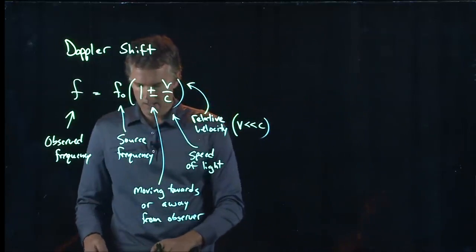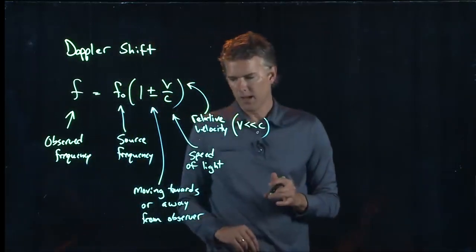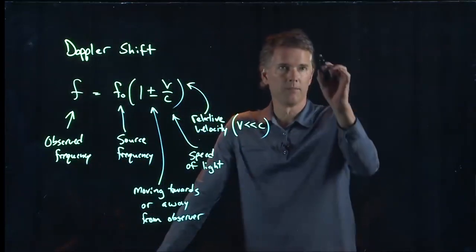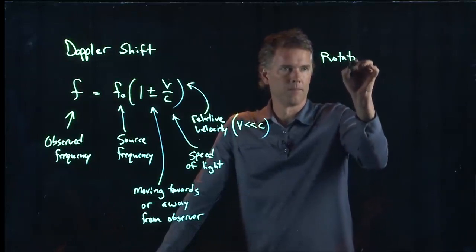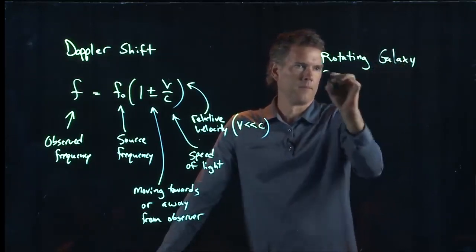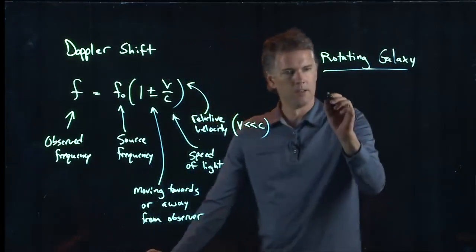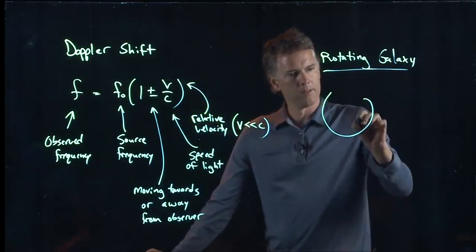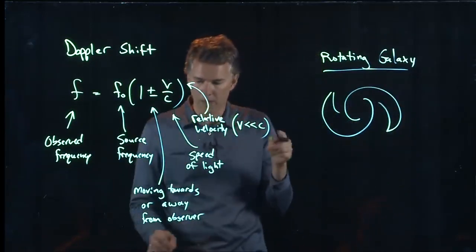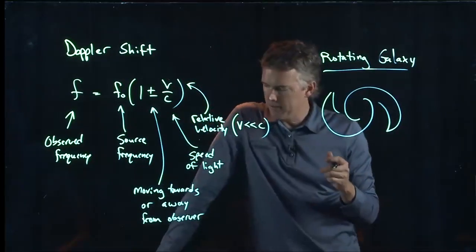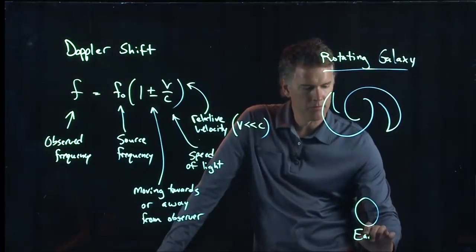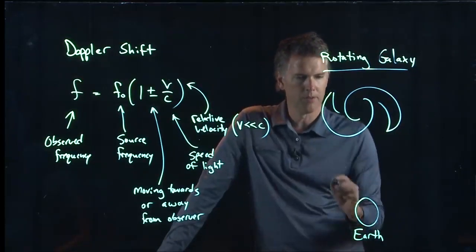So let's take a look at an example of this. And let's look at a rotating galaxy. Okay, so a rotating galaxy looks sort of like this. It's got these spiral arms on it. And the whole thing is spinning. And as it spins, it emits light that we can observe down here on the Earth, not to scale.